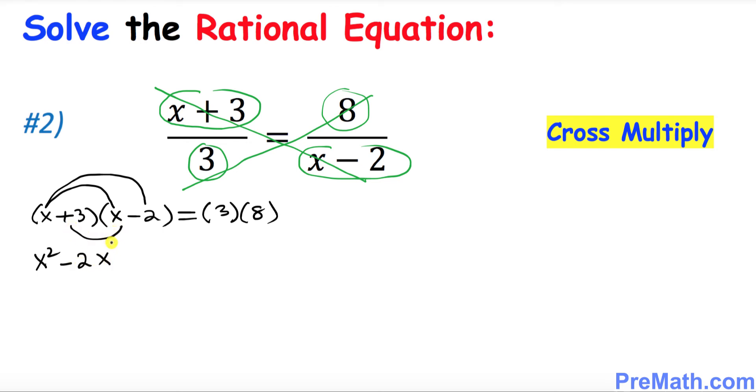Let's combine the like terms on the left hand side. This is going to be x squared plus 1x minus 6. I want you to move this 24 on the left hand side, which will become negative 24 equal to 0. So we get x squared plus x minus 30 equal to 0.